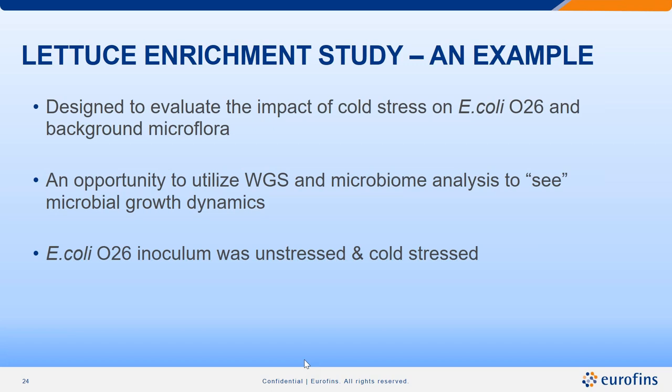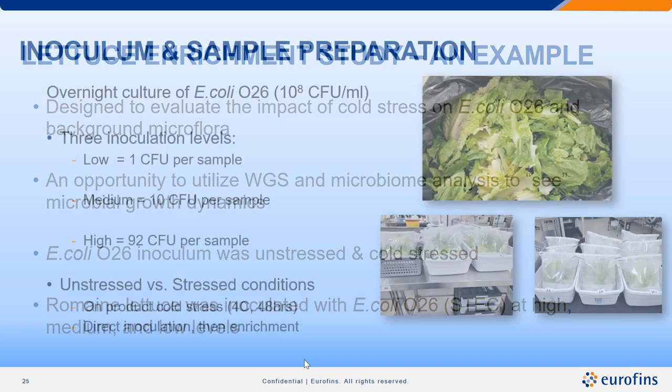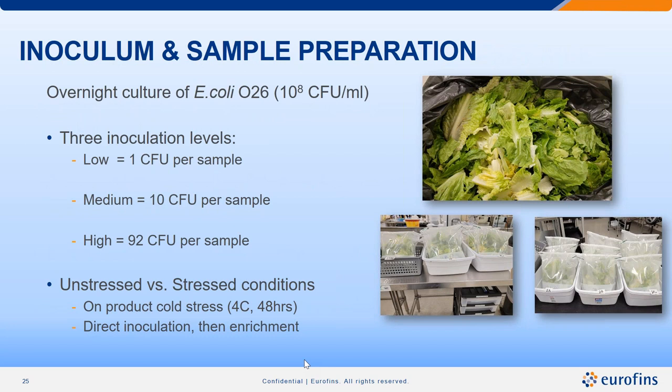The study also allowed us to use whole genome sequencing to see what's going on in the enrichment. E. coli O26 at 10⁸ CFU was inoculated at different levels: low — 1 CFU per 375 gram sample, medium — 10 CFU per sample, or high — 92 CFU per sample. Two conditions: unstressed — direct inoculation then enrichment with pre-warmed media; and cold stressed — inoculated organisms kept at 4°C for 48 hours prior to enrichment, stressing both the background microflora and allowing the organism to attach to the lettuce.